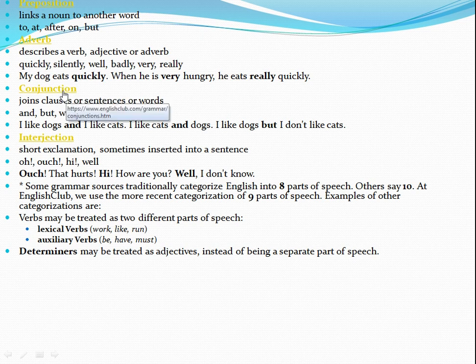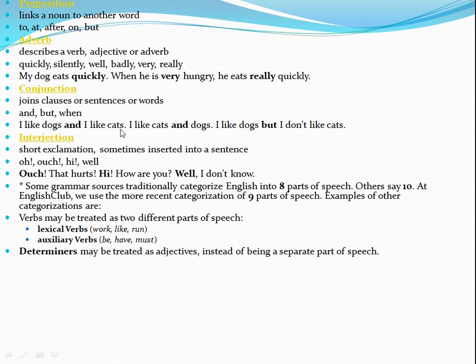Conjunction. What is the role of a conjunction? A conjunction is used to join clauses, sentences or words — two sentences or clauses joined together with the help of conjunctions. Examples: and, but, when. For example: 'I like dogs and I like cats.' 'I like dogs but I don't like cats.'